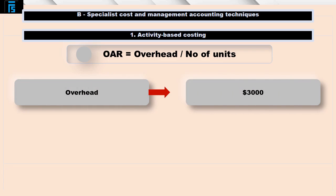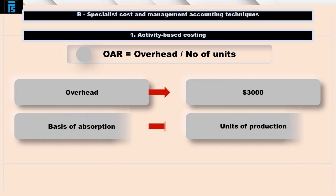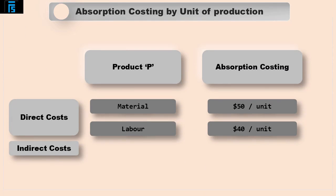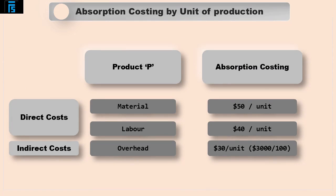Say for example, total company overhead equalled $3,000, and it was decided to absorb overhead based on the number of units produced. Let's say 70 units of Product P as well as 30 units of Product Q were produced — in other words, 100 units in total. Then the overhead absorption rate per unit of each product would be $30, being $3,000 of overhead divided by 100 units.